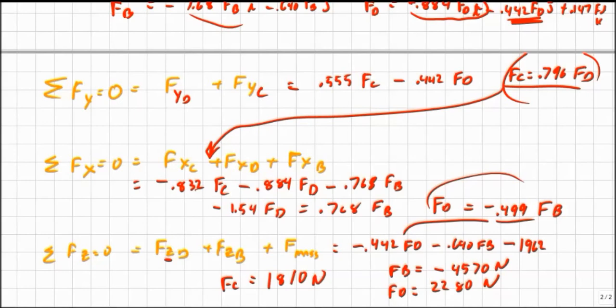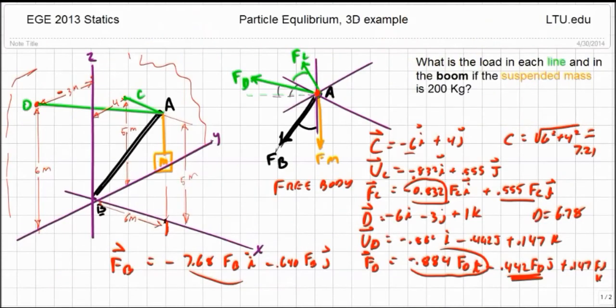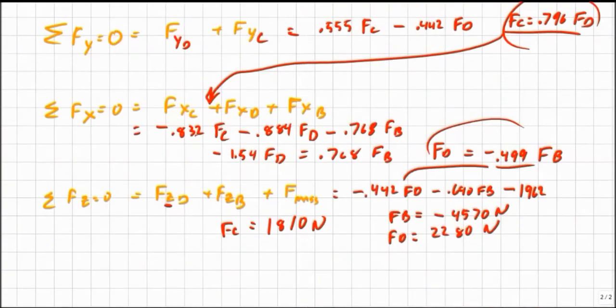And that's all there is to it. Now, if the problem had been stated differently, if my objective was not to find the load in each element at a given mass, if I was given the tensile strength of each element and I was to find the maximum mass, I really would have gone through exactly the same process. The only difference is that at this point, instead of having 1962, I would have left that as an unknown.